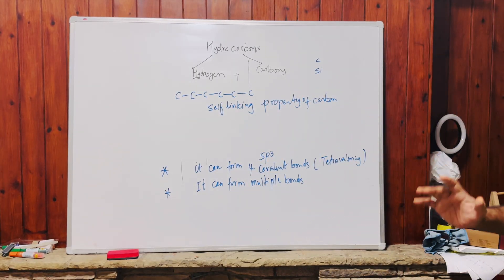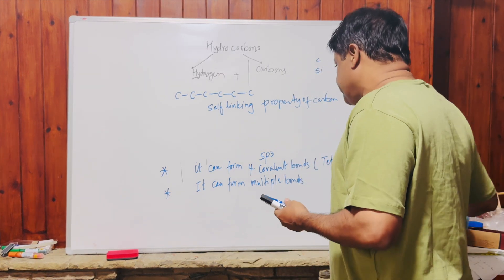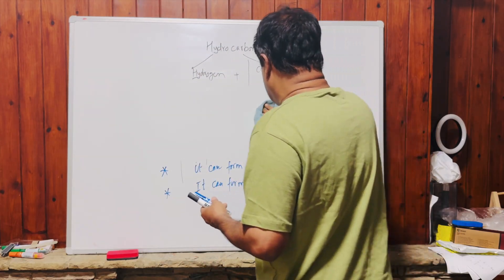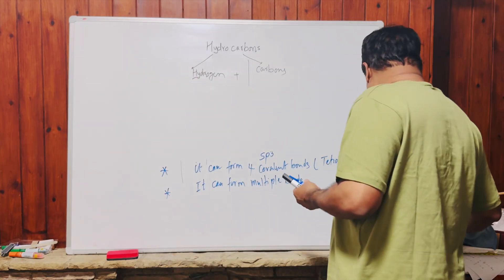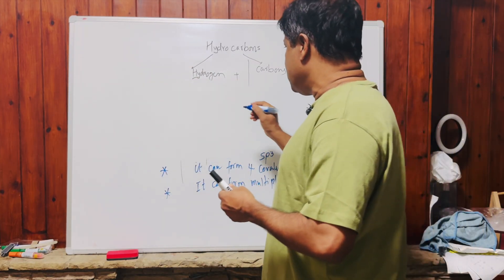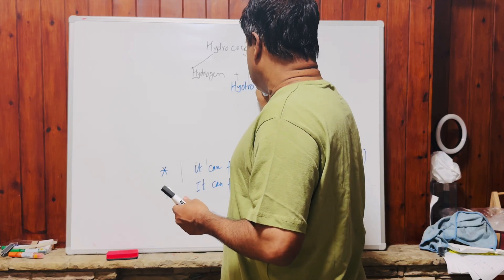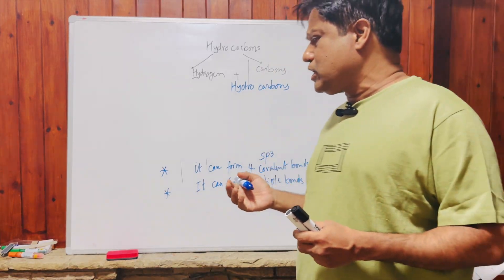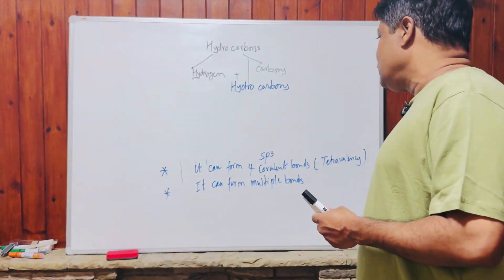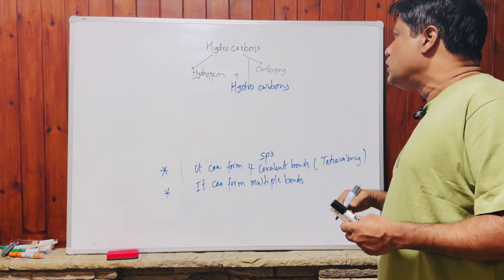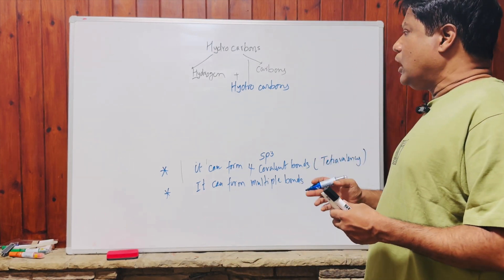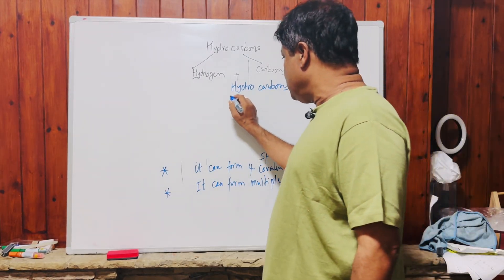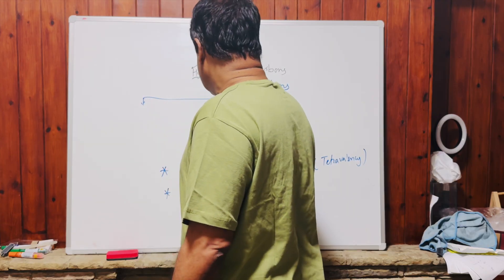A hydrocarbon is a class of compound that has only carbon and hydrogen. The definition of hydrocarbon: it is a class of organic compound having carbon and hydrogen only, bonded to each other by means of covalent bonds. Hydrocarbons can be divided into two types: saturated hydrocarbons and unsaturated hydrocarbons.